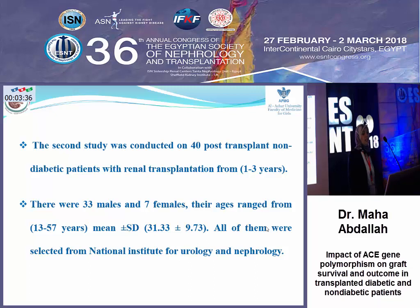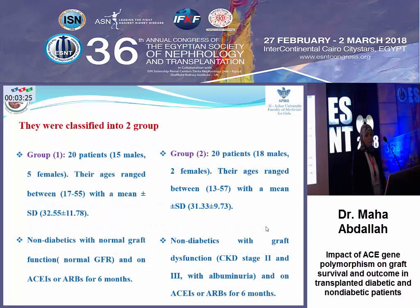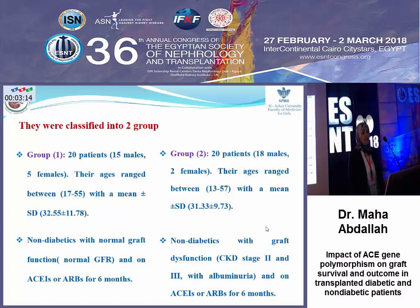The second study was conducted on 40 post-transplant non-diabetic patients with renal transplantation for one to three years, all selected from the National Institute of Urology. They were classified into two groups: Group 1 included 20 patients with normal graft function receiving ACE inhibitors or ARBs for six months, and Group 2 included 20 patients with graft dysfunction receiving ACE inhibitors or ARBs for about six months.